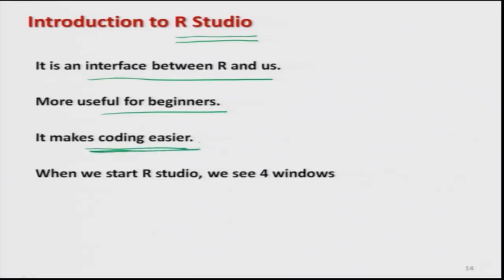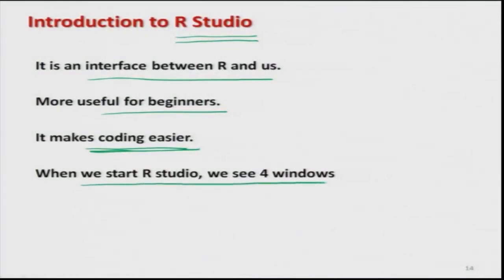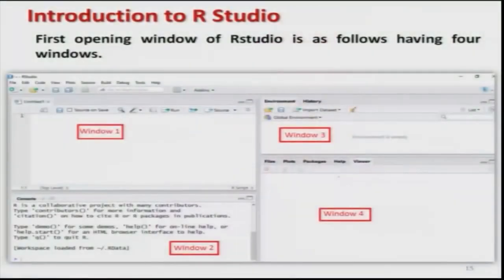When writing the code of a program, it is easier — at every step you can highlight, run, and check whether your commands are working fine. In case you find any mistake, you can correct it at the same step. As we have seen, when we start RStudio, we have four windows. Our objective is to learn what these four windows indicate and what type of information they provide. So, Window 1, Window 2, Window 3, and Window 4 — let us understand the information provided by each window one by one.